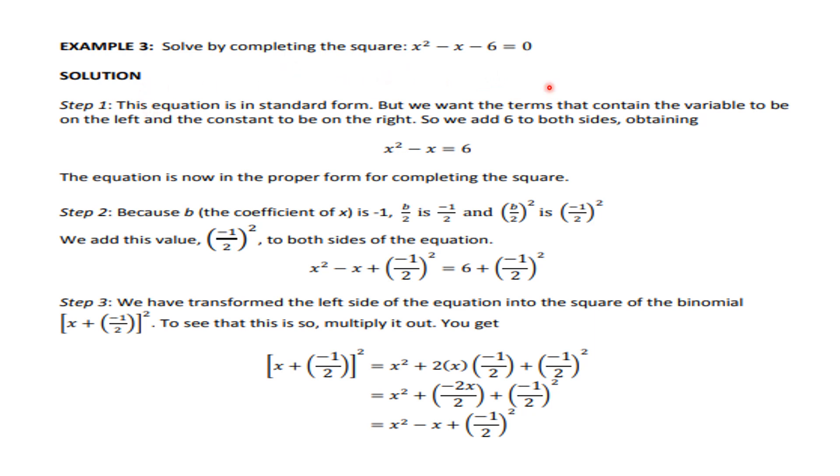In step number 1, add 6 to both sides, so you will have x squared minus x is equal to 6.